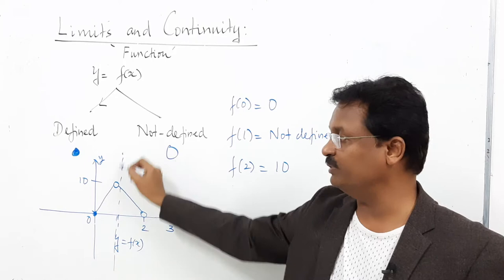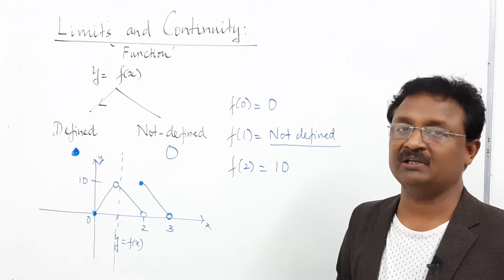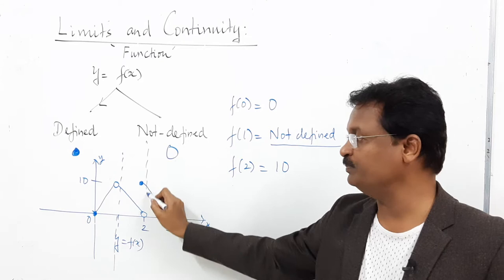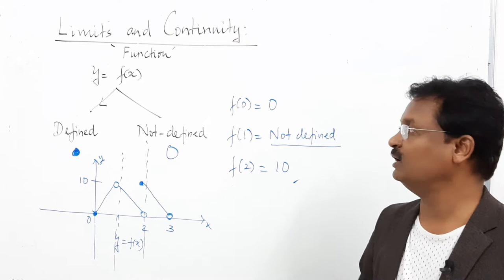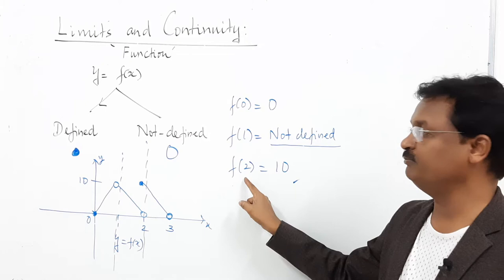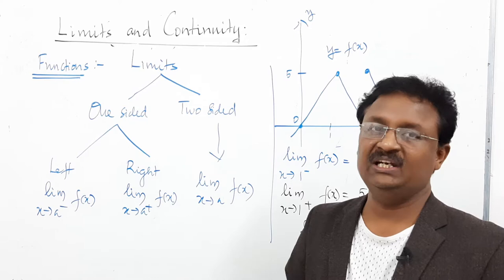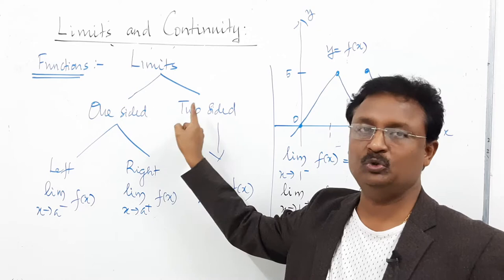To find f(1), draw a dotted vertical line through x = 1. Along this dotted line, the function has an open circle — so the function is not defined at x = 1. For f(2), the function is defined at a closed point with corresponding y-value of 10. So: f(0) = 0, f(1) = undefined, f(2) = 10.